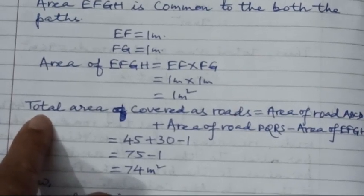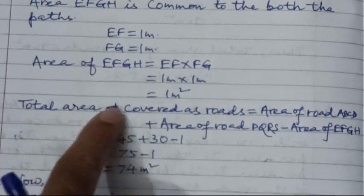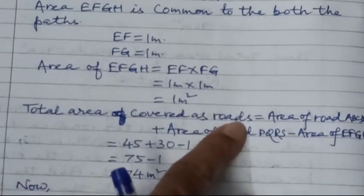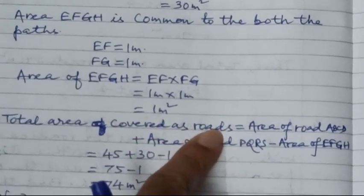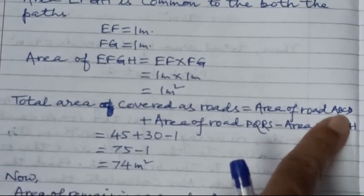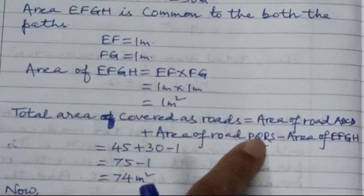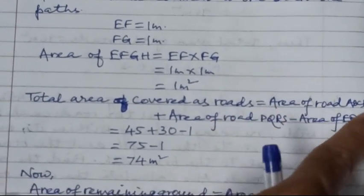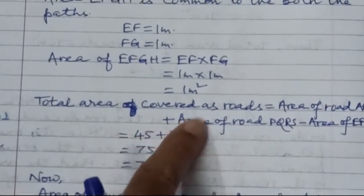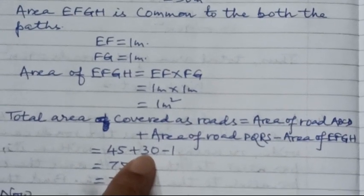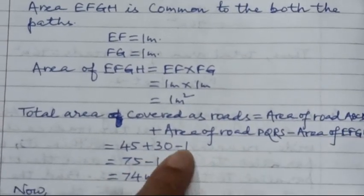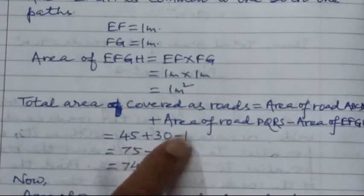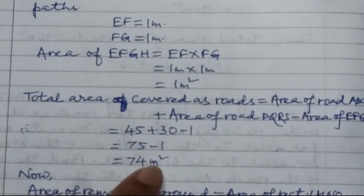Similarly, we will find the total area covered by the roads. The total area of roads equals the area of road ABCD plus the area of road PQRS minus the common area of EFGH. That is 45 meter square plus 30 meter square minus 1 meter square, giving 45 plus 30 equals 75, minus 1 equals 74 meter square.